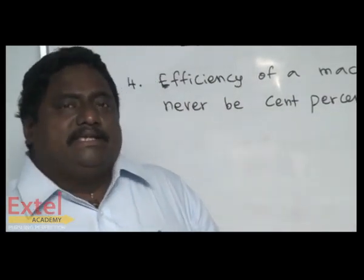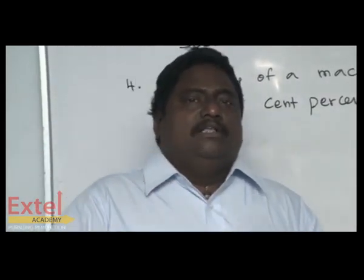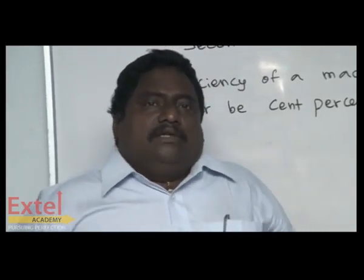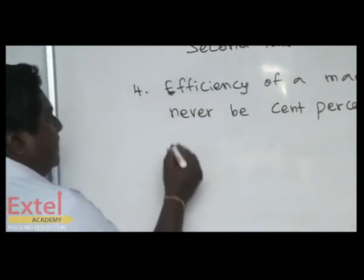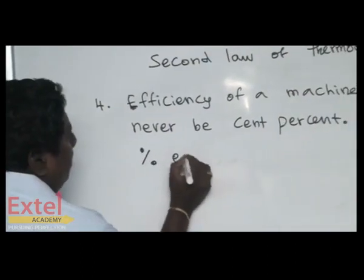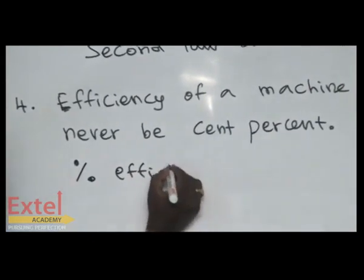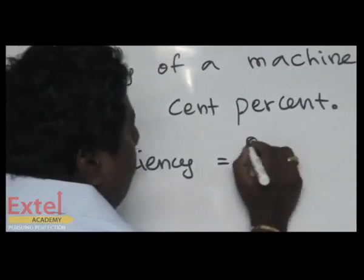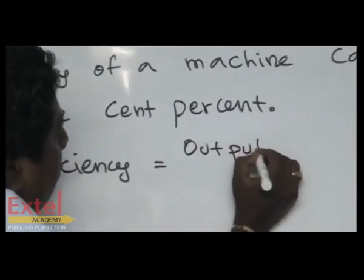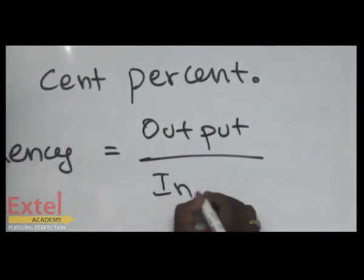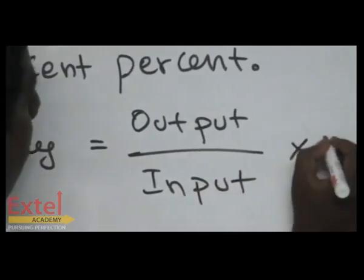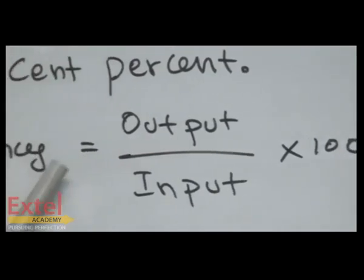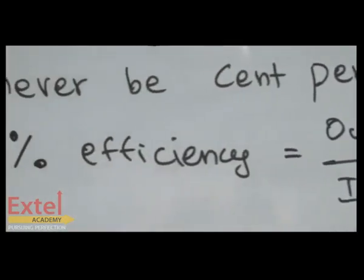What is input? The energy given. What is output? The work taken from the machine. So the output and input — the percentage efficiency. Always, the efficiency has been represented in percentage. That is, output by input into 100. The percentage efficiency has been represented as output divided by input into 100.